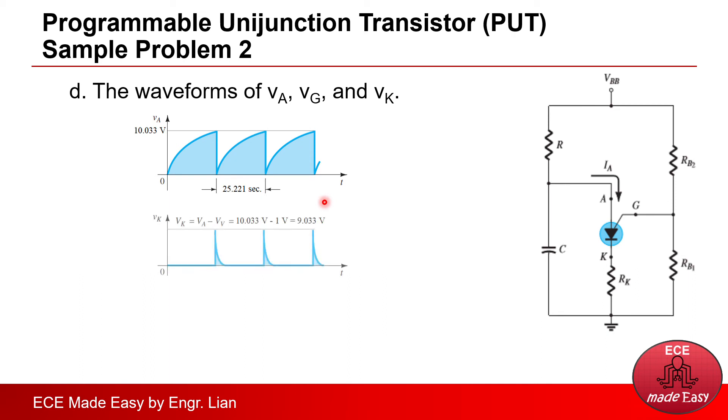Next, the voltage across the cathode here. So we'll just need to solve by subtracting the voltage across this PUT, which is shown here, VA minus VV.